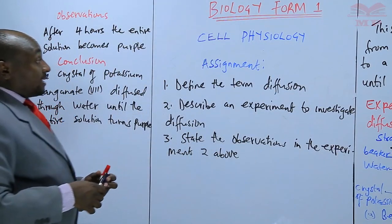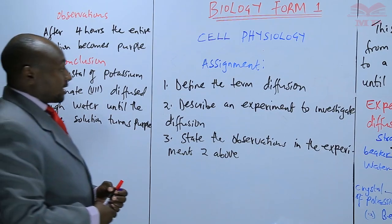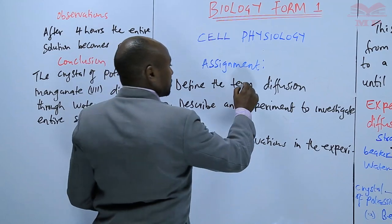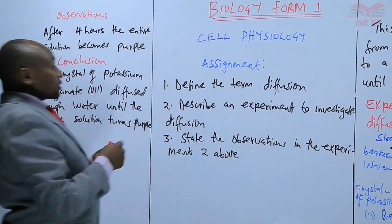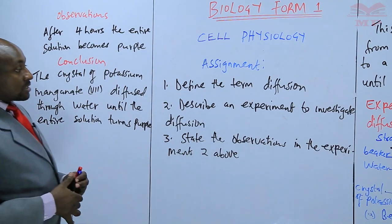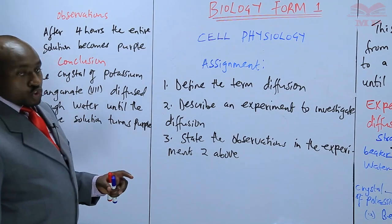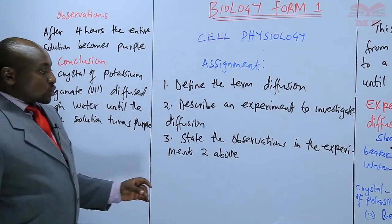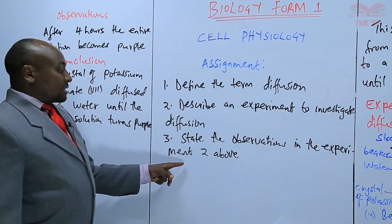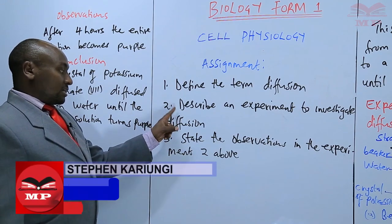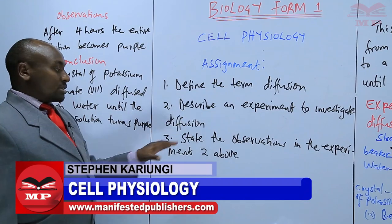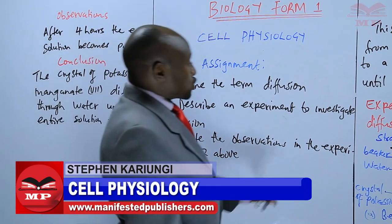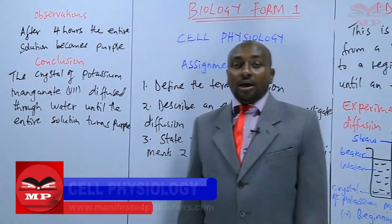The assignment is as indicated. Question one: define the term diffusion. Question two: describe an experiment to investigate diffusion. Question three: state the observations in experiment number two — what are the observations you will make in that particular experiment? We'll stop there for today. Goodbye.